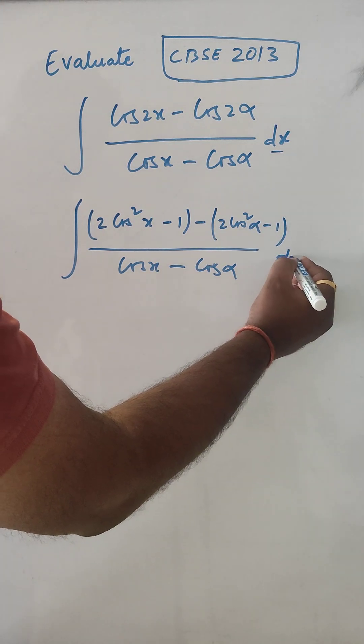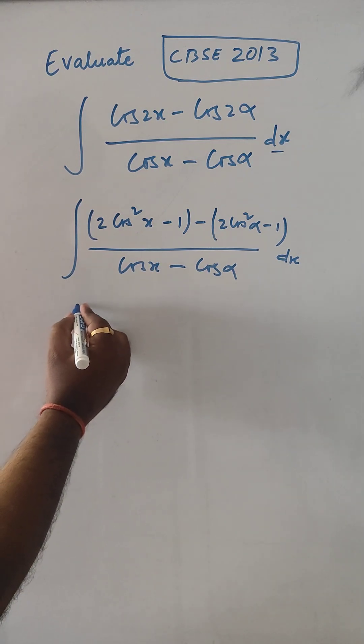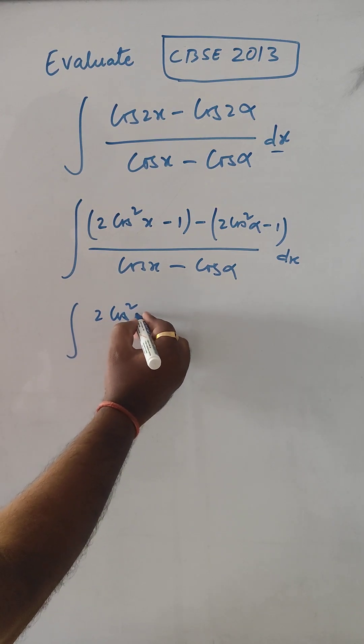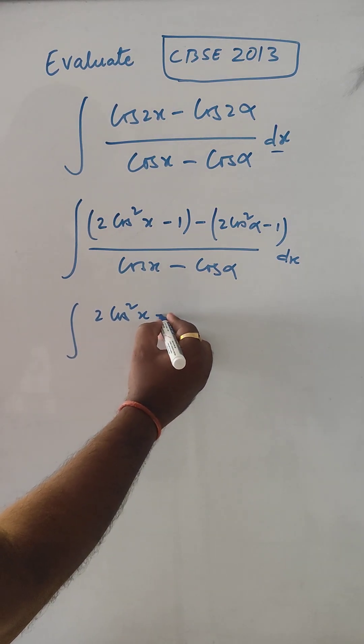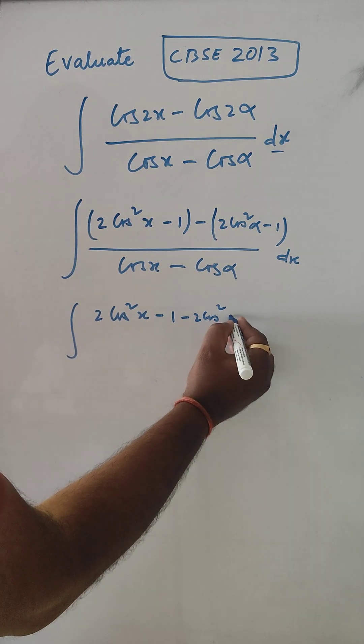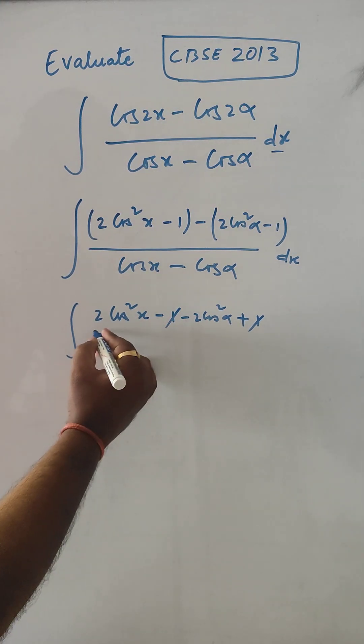Now in the numerator we have 2 cos²x - 1 - 2 cos²α + 1. The ones cancel out.